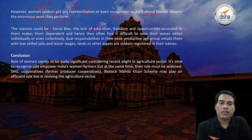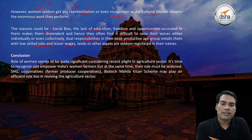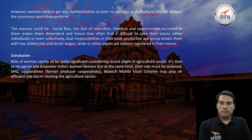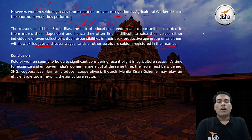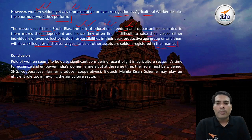The reasons include social bias, lack of education, freedom, and opportunities, which make women dependent and hence they find it difficult to raise their voices individually or collectively. Dual responsibilities in their peak productive age group entail them with low-skill jobs and lesser wages. Lands and assets are seldom registered in their names. Women in rural societies do not have a prominent place, and despite being vehemently involved in agriculture, their recognition is not identified by the larger chunk of society.